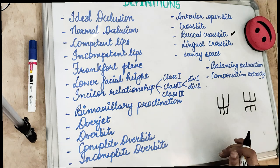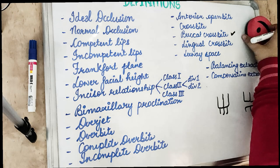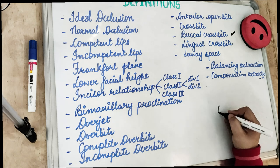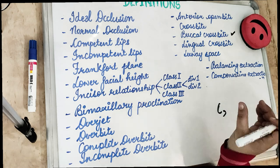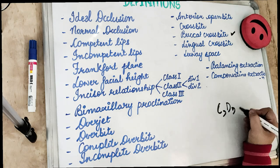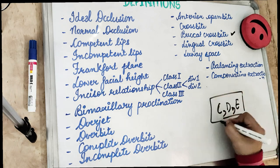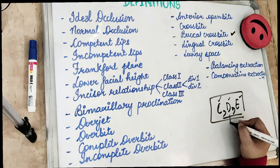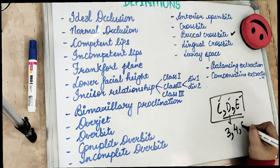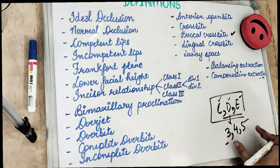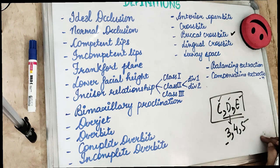Leeway space is the difference between the combined mesiodistal diameters of the deciduous teeth C, D, and E — the deciduous canine, first molar, and second molar — and the permanent teeth 3, 4, and 5 — the permanent canine, first premolar, and second premolar. The leeway space is greater in the lower arch than in the upper arch.